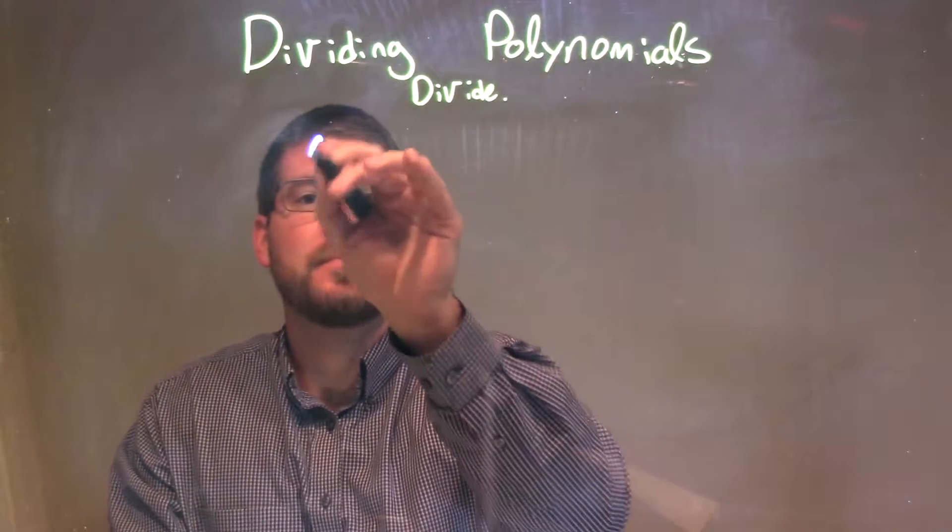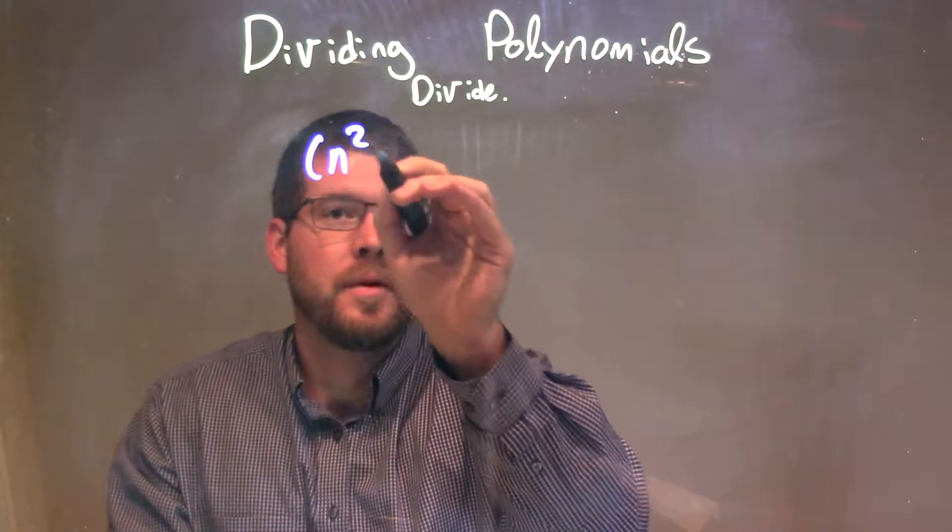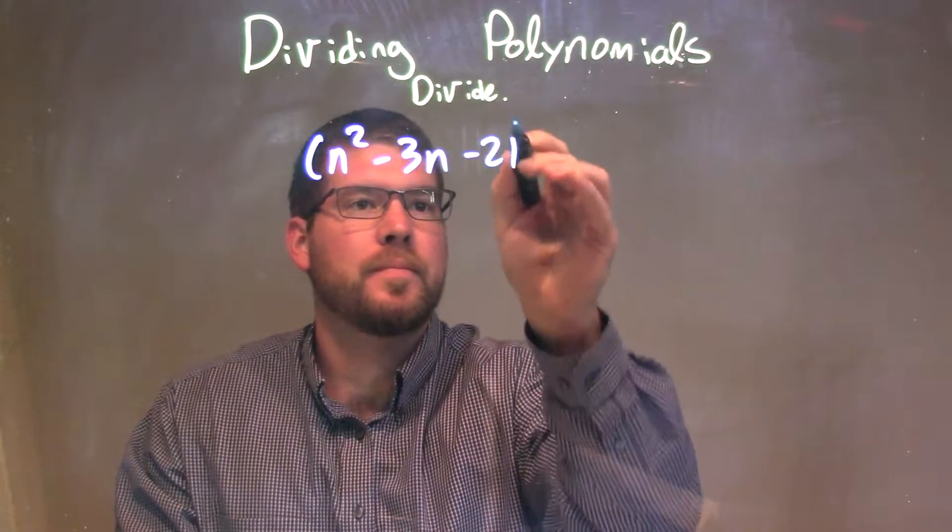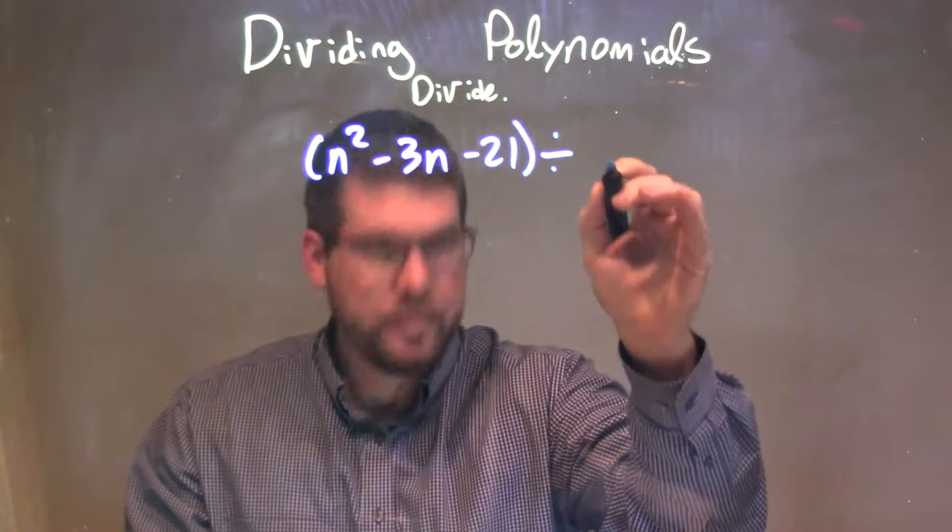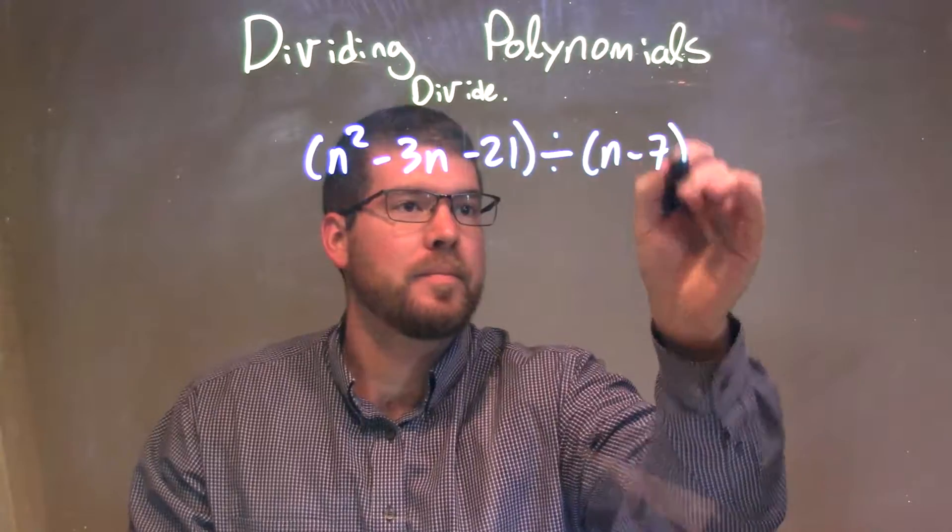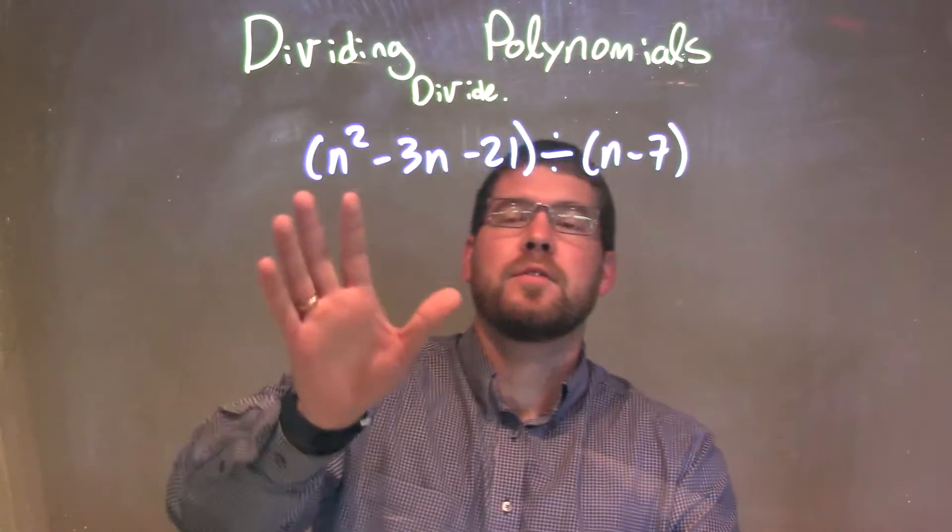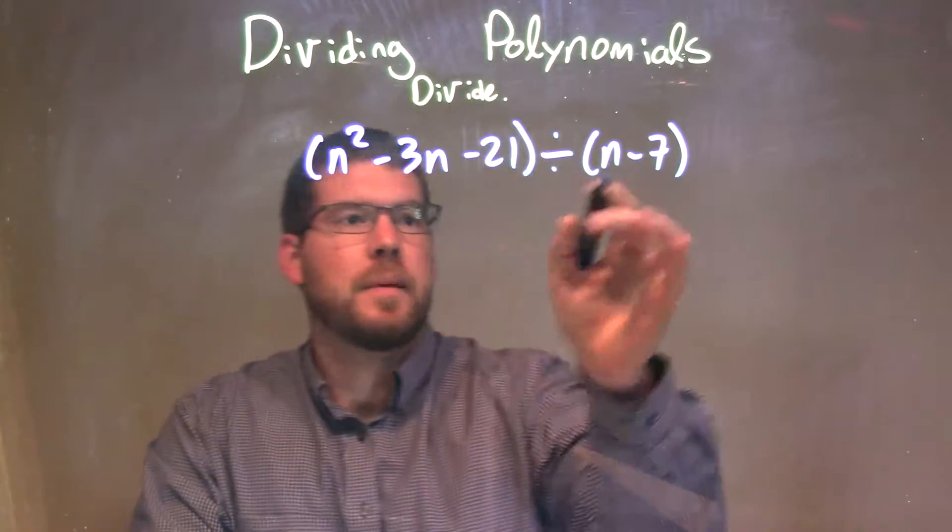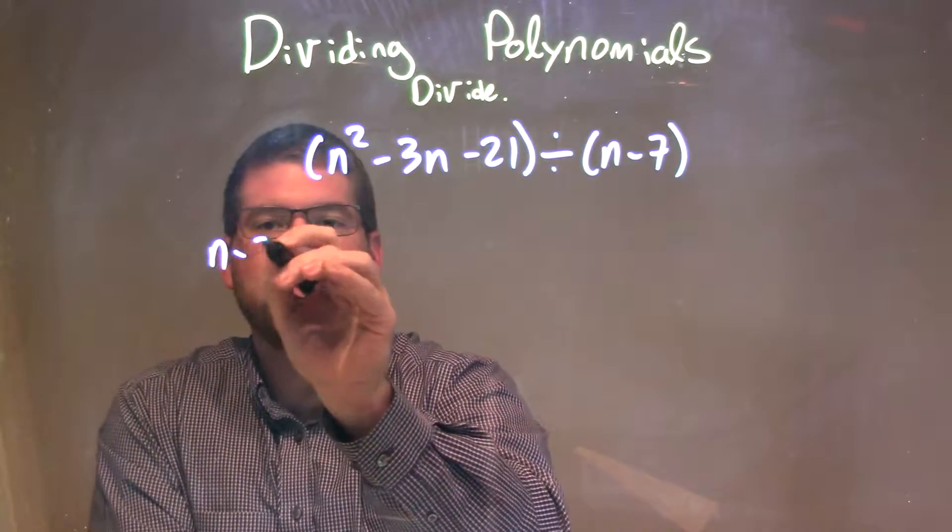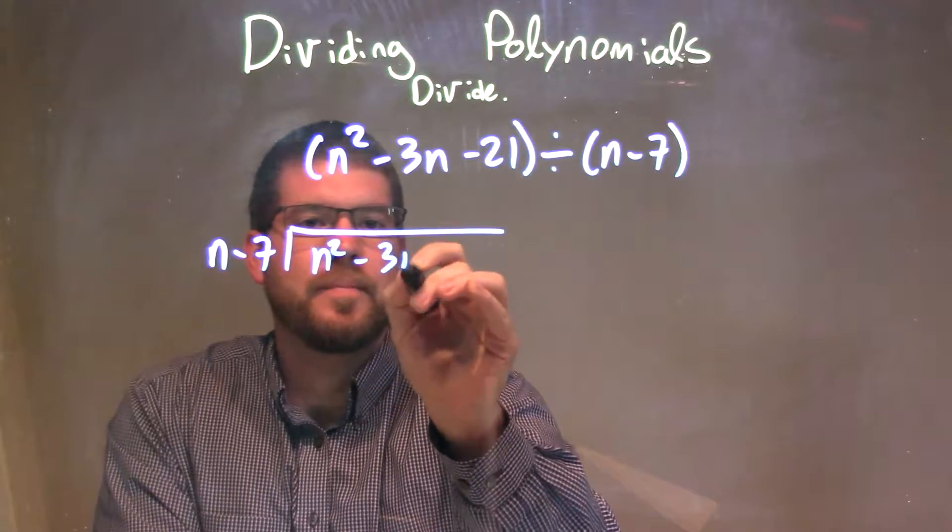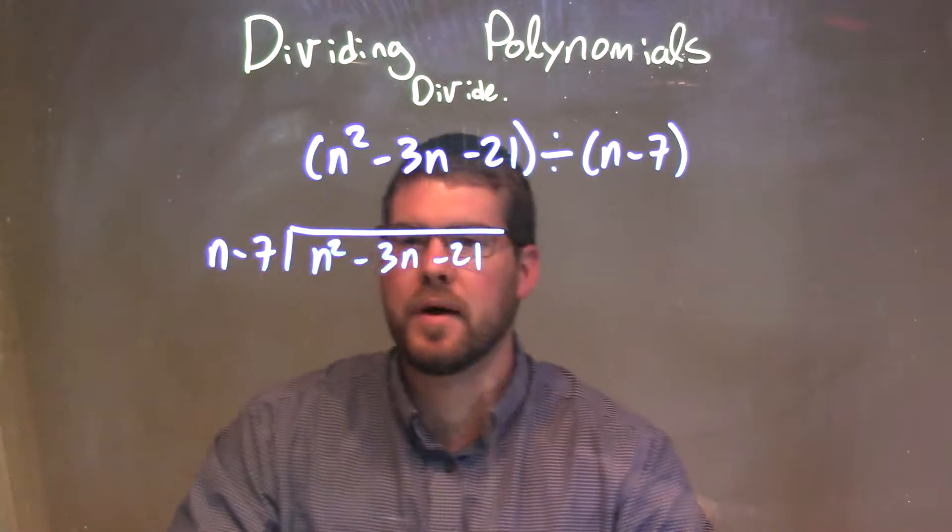So if I was given this to divide, n squared minus 3n minus 21 divided by n minus 7, okay? So if I want to divide this, I'm going to use my long division. I'm going to take my n minus 7 here, and have it go into my n squared minus 3n minus 21.